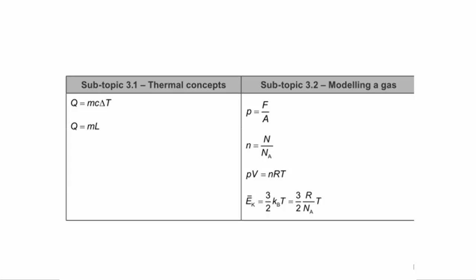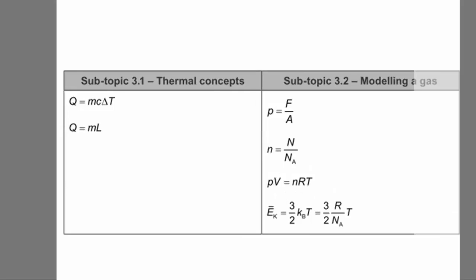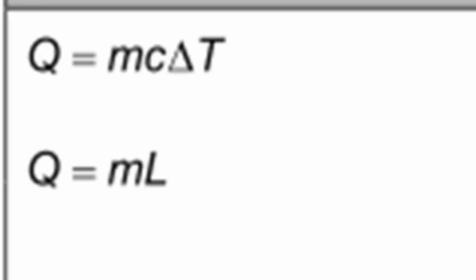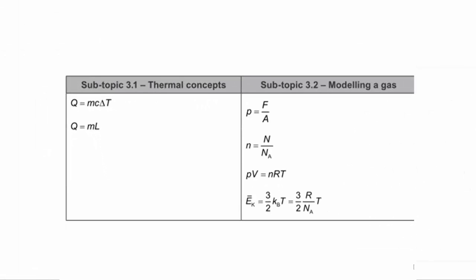This is a view of the data booklet and these are the formulas that are in section 3.1 or 3.2. On the top left hand corner we have the equation for the specific heat capacity. We also have a specific latent heat and on the right hand side we talk more about the modeling of a gas. We're going to look particularly at the equation on the bottom right hand corner.